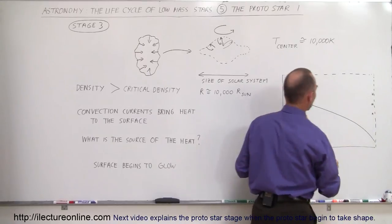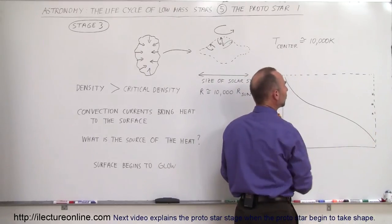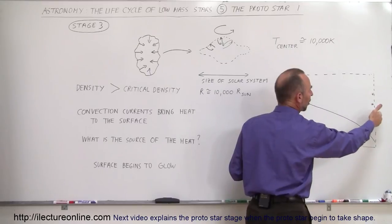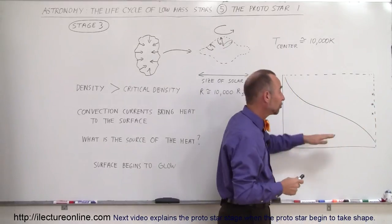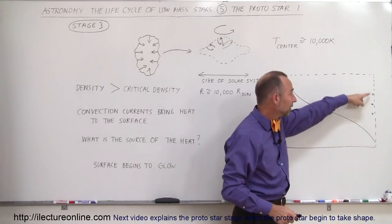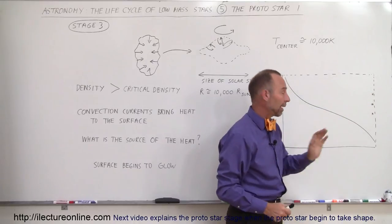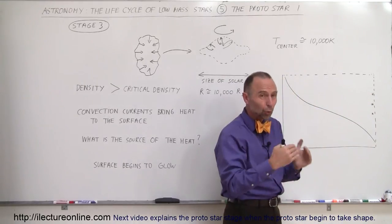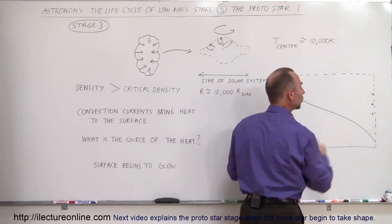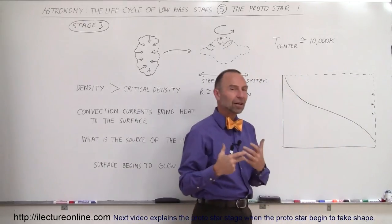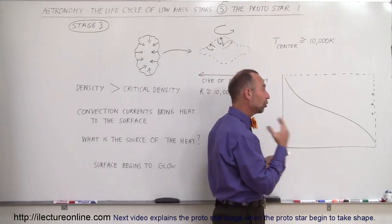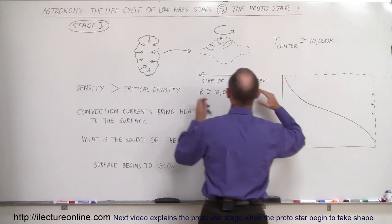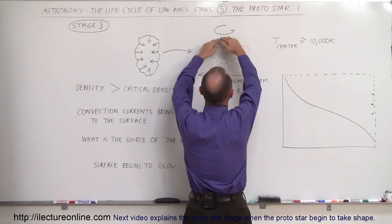If we draw an HR diagram where this is the main sequence, the protostar would appear somewhere on the right side of the diagram, where all the red objects are, because they're still very cool on the surface. But they're very luminous, not because they're very hot, but because they're so enormous in size.